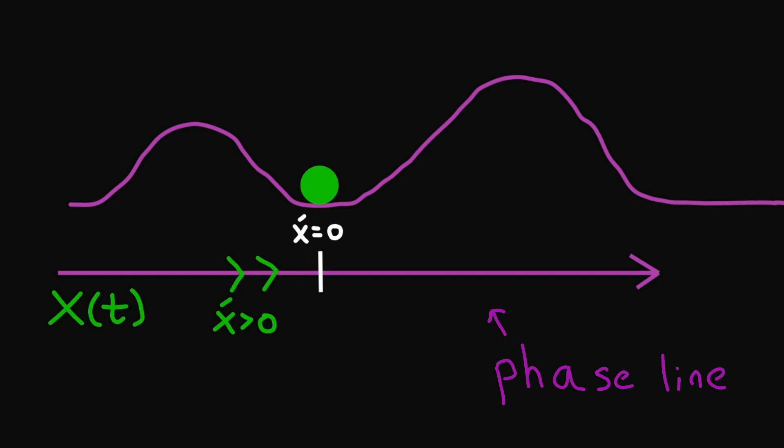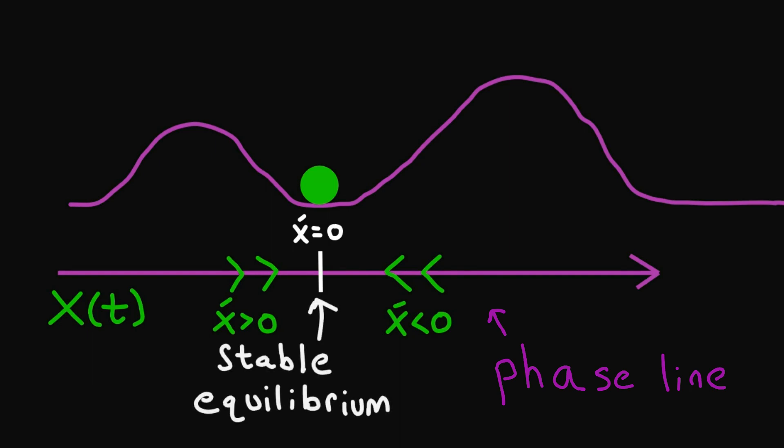Now let's add some arrows to represent this information. These arrows point left and tell us that if we nudge the ball to the right and release it, it wants to roll back to the left. We're going to call this point a stable equilibrium. We use the word equilibrium because if we place the ball there, it doesn't move. We use the word stable because if we nudge the ball a little to the left or to the right, it comes back to where it started.